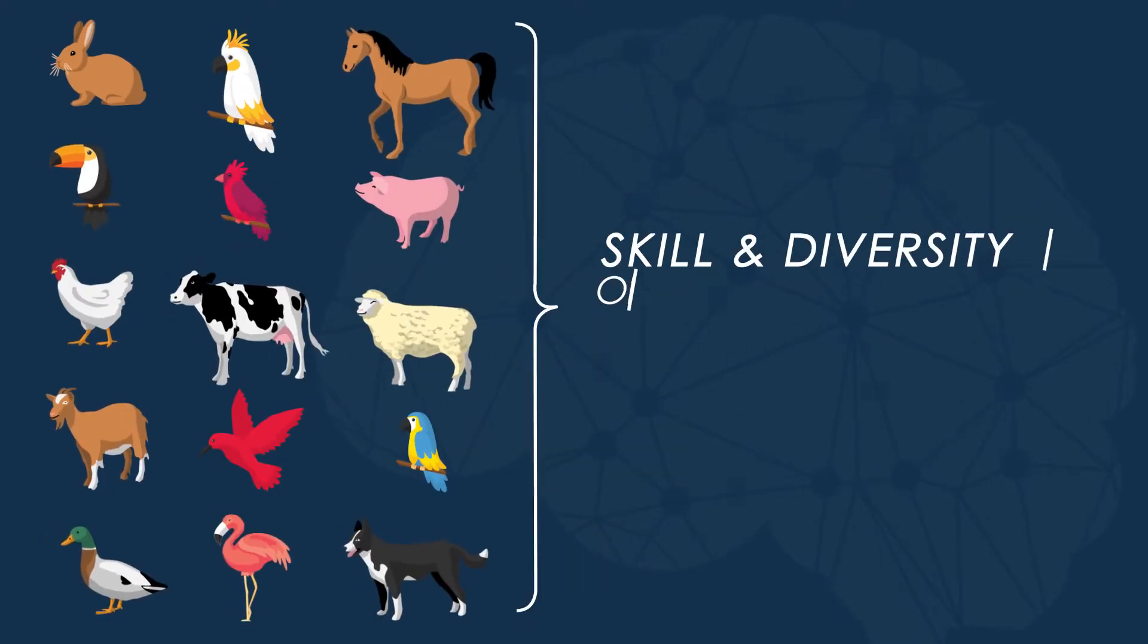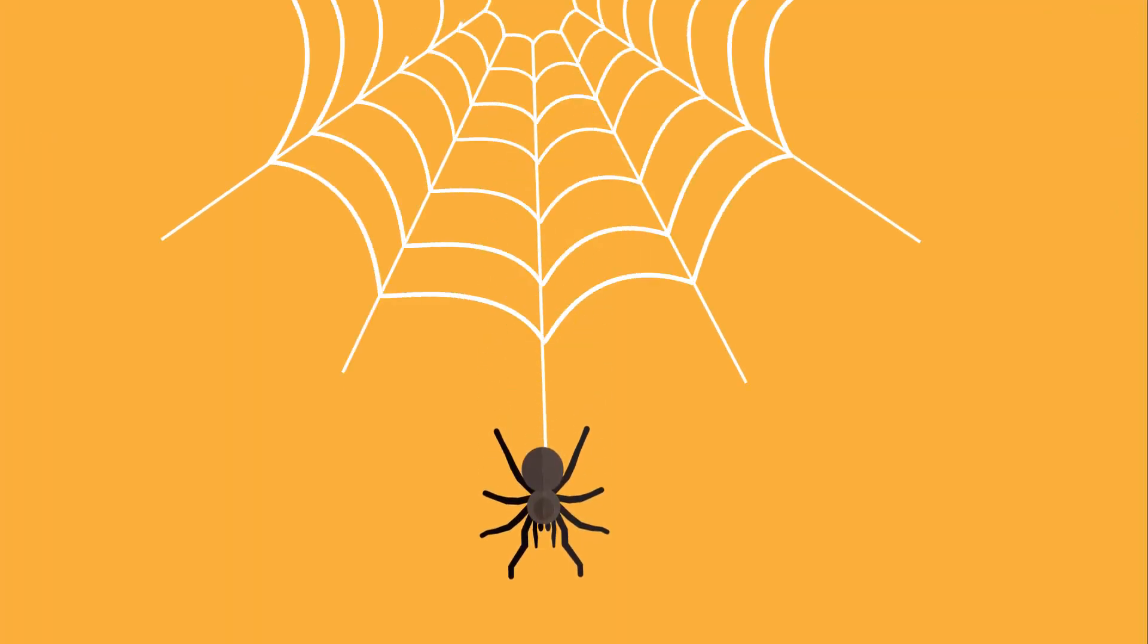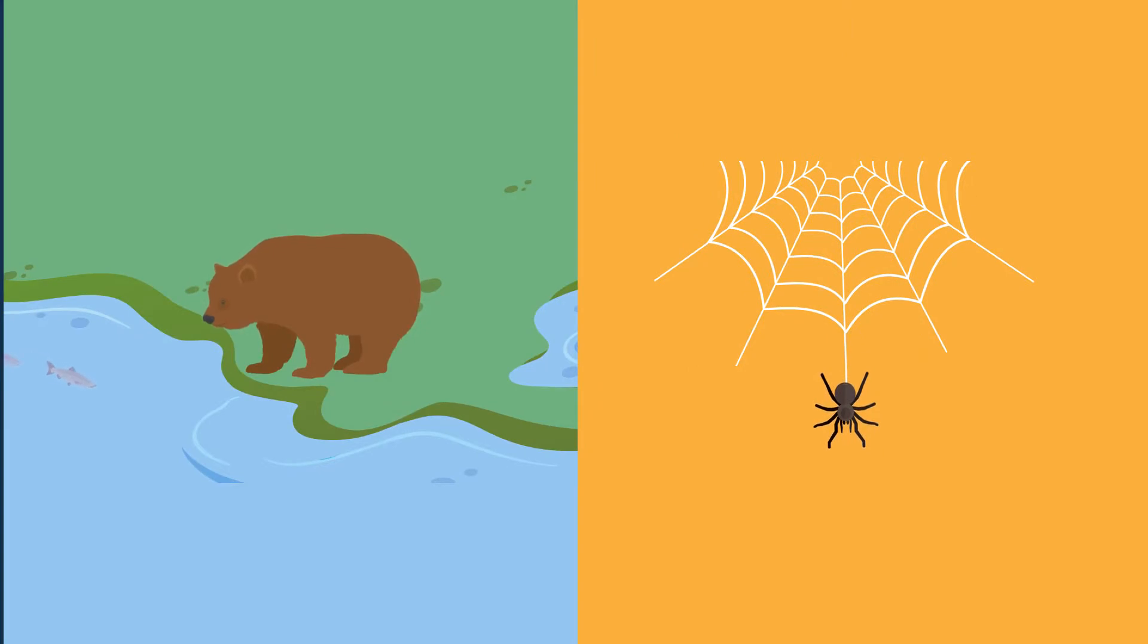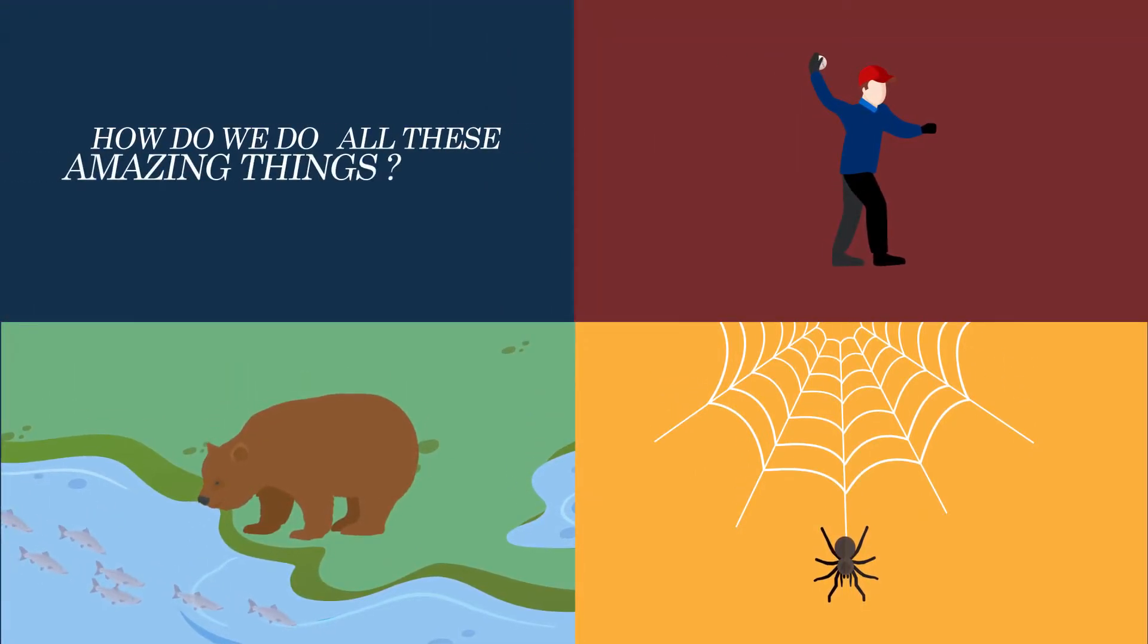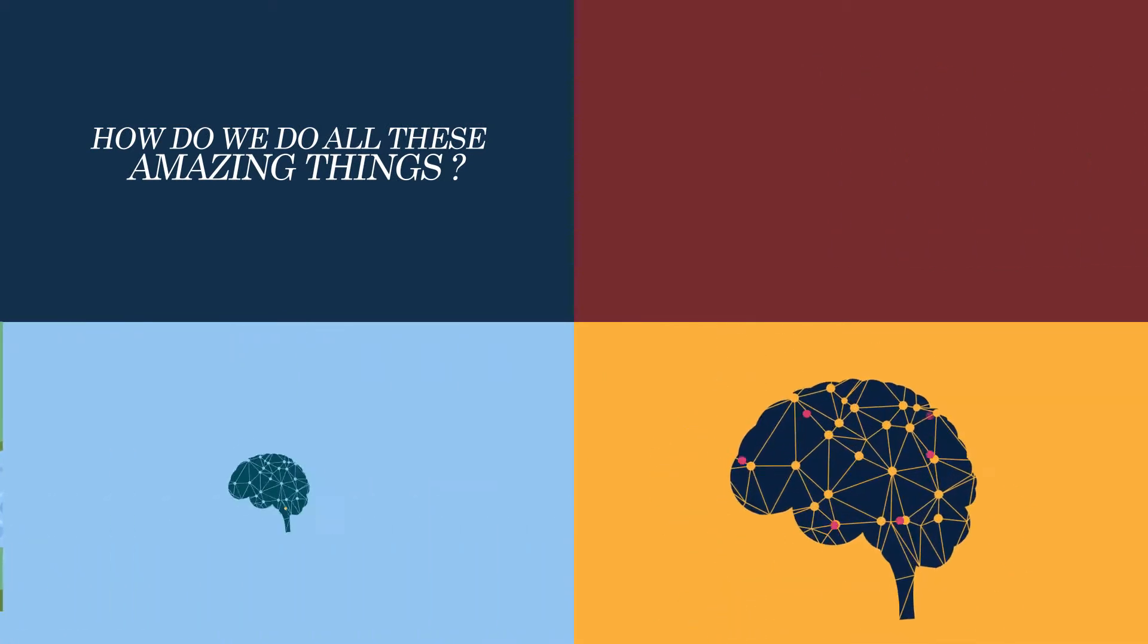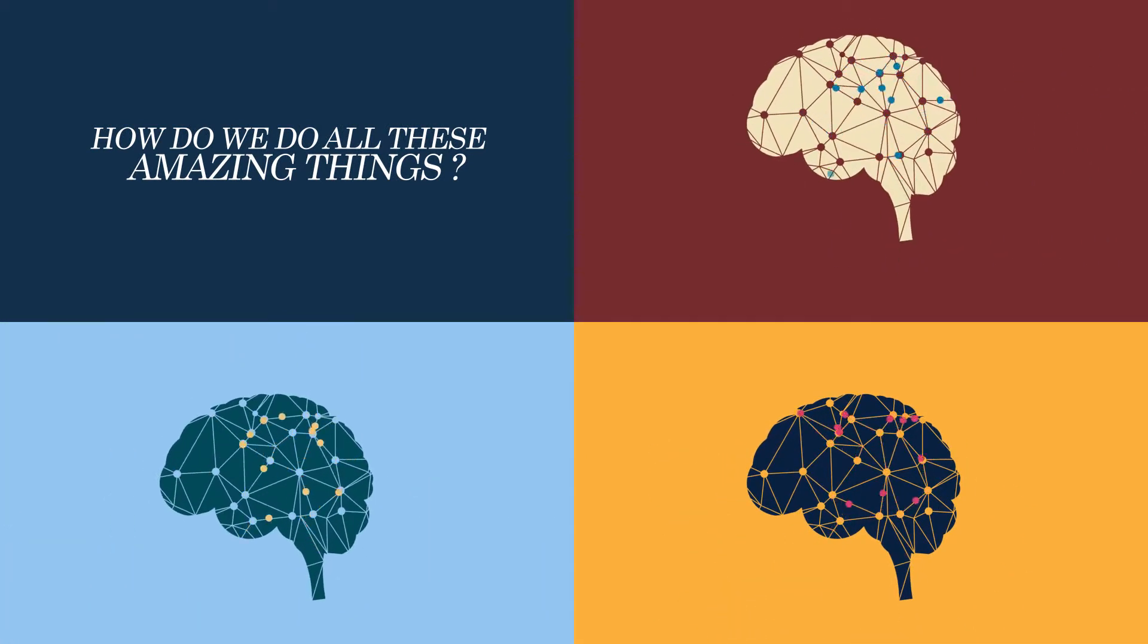The skill and diversity of animal behavior is fascinating. A spider spinning a web, a bear catching a fish, a person catching a ball. How do we do all these amazing things? Our brains accomplish all these behaviors by performing thousands of subconscious computations every second.